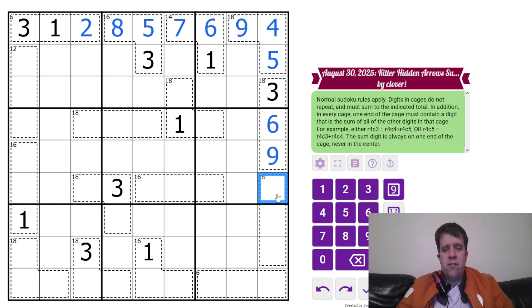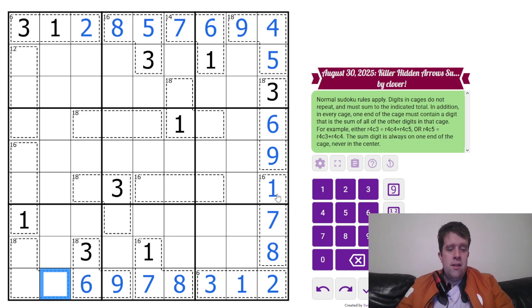The two ones here are going to tell me the one goes like that, making this a two. Three needs to go on one end of the six cage, so it has to look like that. Eight has to go on one end of the 16 cage, making it look like that. Nine has to go on one end of the 18 cage, making it look like that. This is now four and five. I don't know what that's going to be just yet, but that's fine.